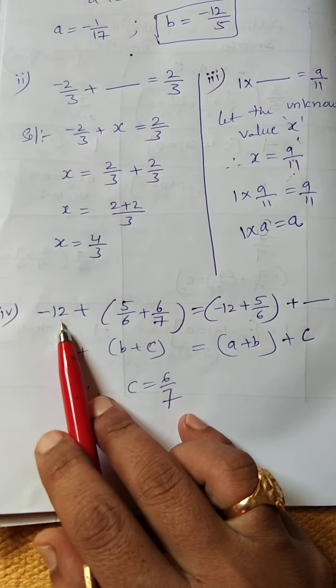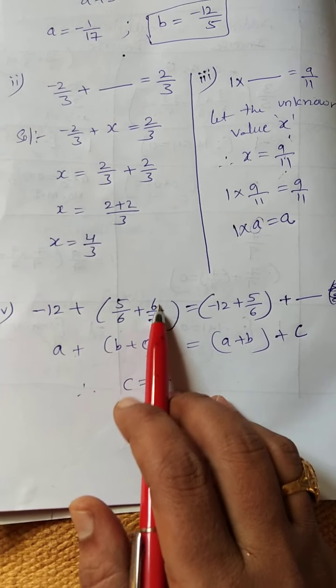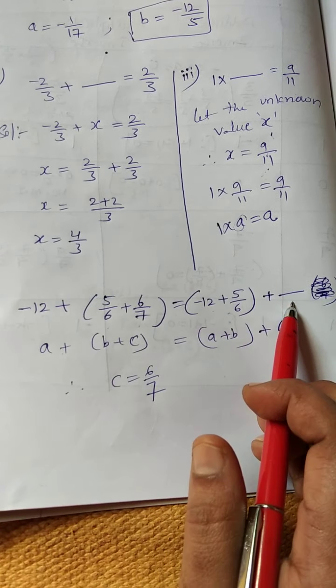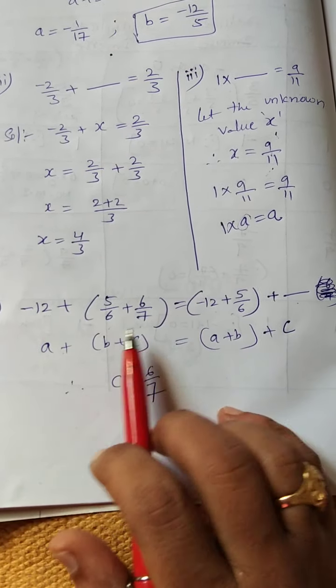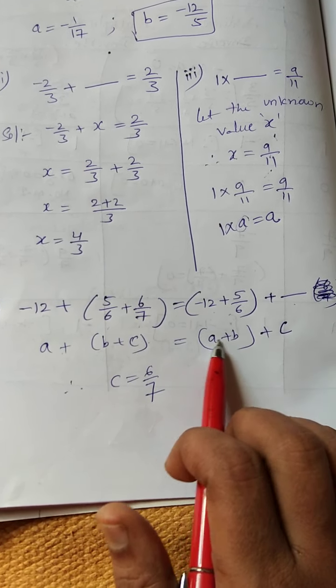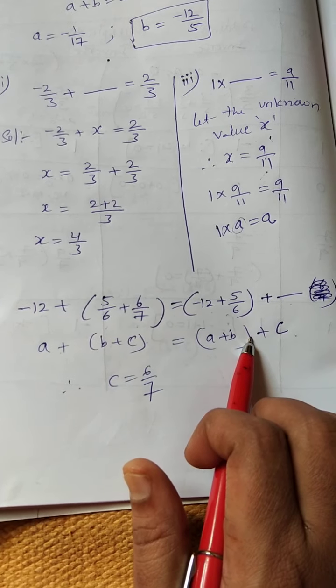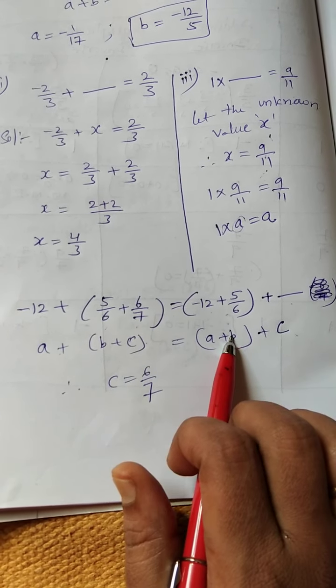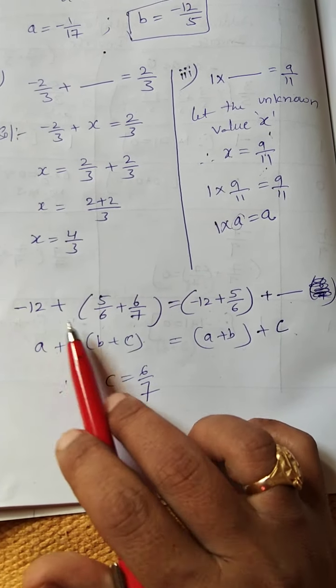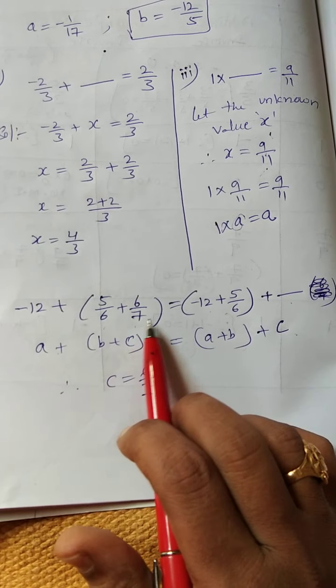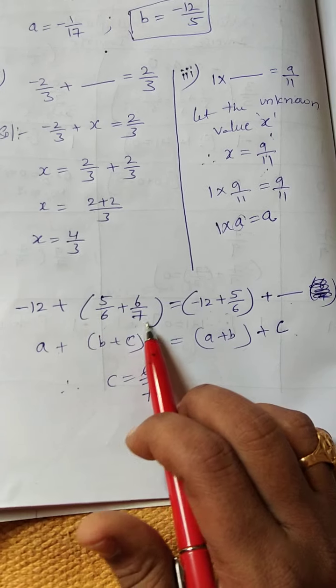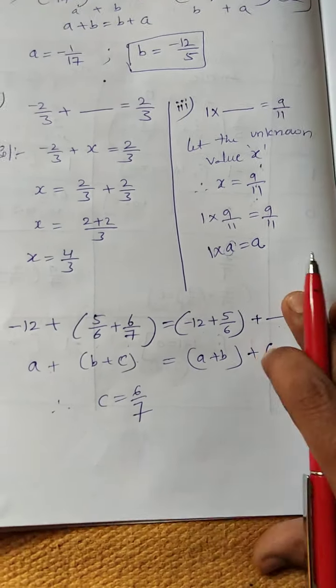Fourth part: -12 + (5/6 + 6/7) = -12 + 5/6 + dash. This uses the associative property: A + (B + C) = (A + B) + C. Here A is -12, B is 5/6, C is 6/7. A and B are there, but C is not, so the blank value is 6/7.